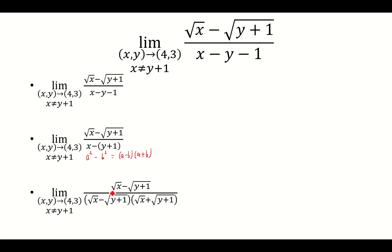So the denominator is the square root of x minus square root of y plus 1 times square root of x plus the square root of y plus 1. Now the square root of x minus square root of y plus 1 will cancel.